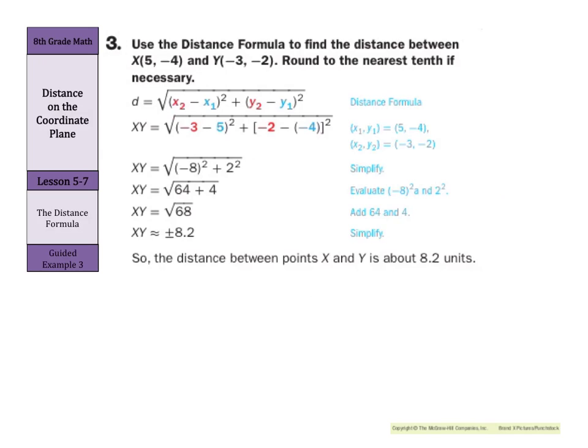It says use the distance formula to find the distance between (4, -4) and (-3, 2), and round to the nearest tenth if necessary. Now, you can see where (x₁, y₁) was the first ordered pair, (x₂, y₂) was the second. We made our substitutions in, paid attention to our subtraction of integers, and took the square root. The more you practice this formula, the better you'll get at it.